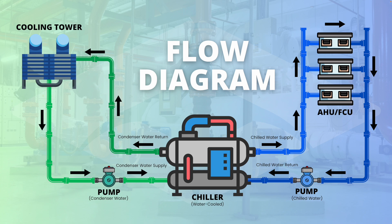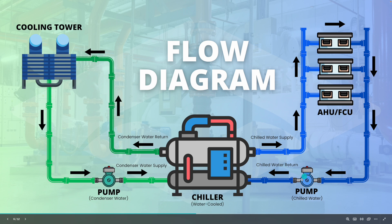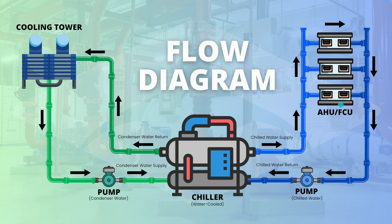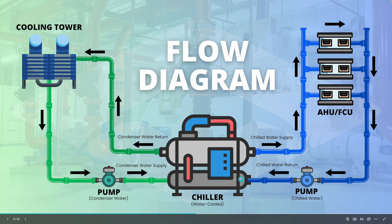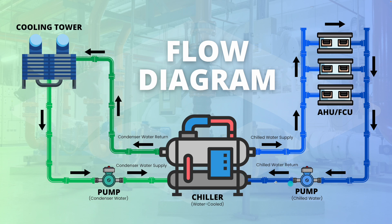Now let's look at how these four components work together using the flow diagram. At the center is the chiller — this is the water-cooled type — with the chilled water pump, condenser water pump, AHU and FCU, and cooling tower. The chiller first produces chilled water supply, which goes directly to the AHU and FCU. The chilled water passes through their cooling coils, where air is drawn across the coil and cooled down. The supply is typically 6 to 7 degrees Celsius and the return is about 12 degrees Celsius — a 5-degree temperature difference. The pump circulates the chilled water, which then returns through the evaporator of the chiller and continues the cycle in a closed loop.